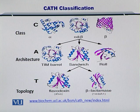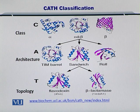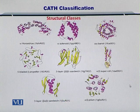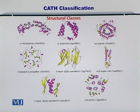From this figure, it is clear that the highest level of organization is the topology, followed by architecture, and below that is the class or the domain. The different structural classes are shown here for your reference.